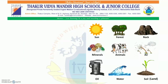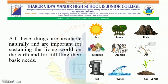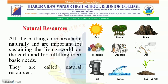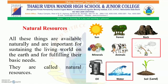In this picture, you can see different things like sun, forest, rock, minerals, animals, air, oil, water and soil. All these things are available naturally and are important for sustaining the living world on the earth and for fulfilling their basic needs. In this chapter, we are going to study air, water and soil, i.e. land, in detail.